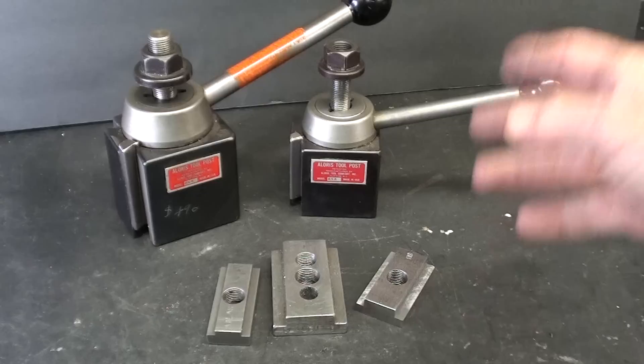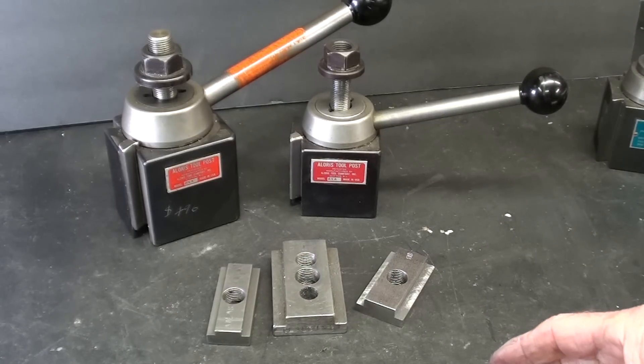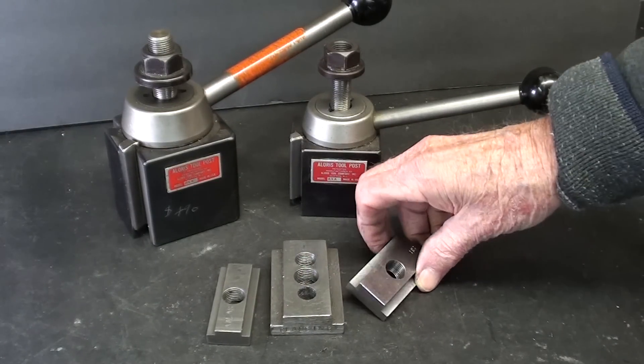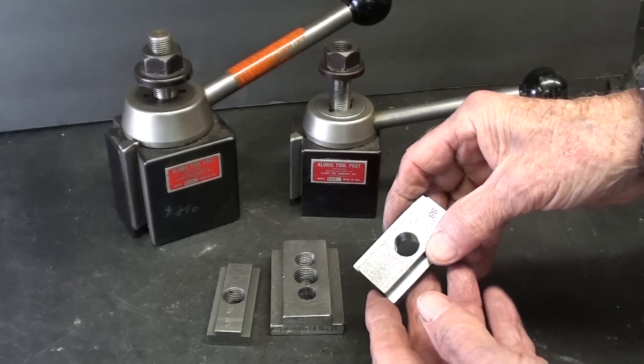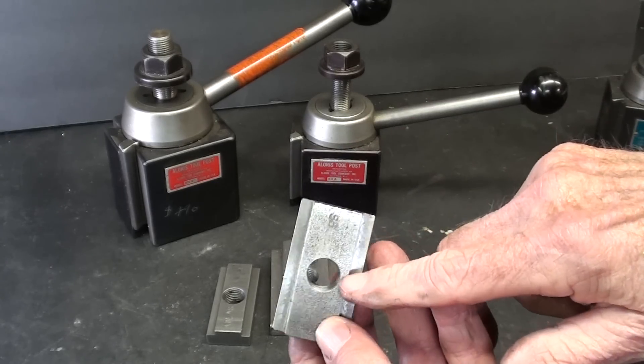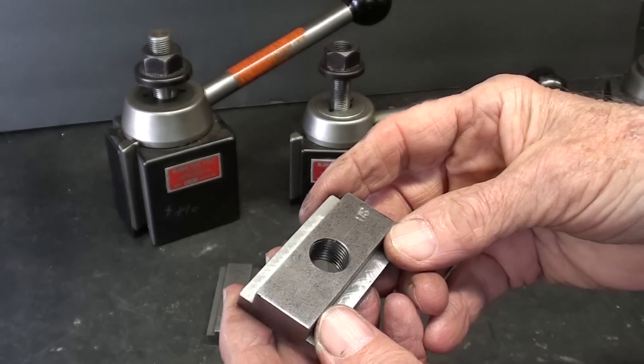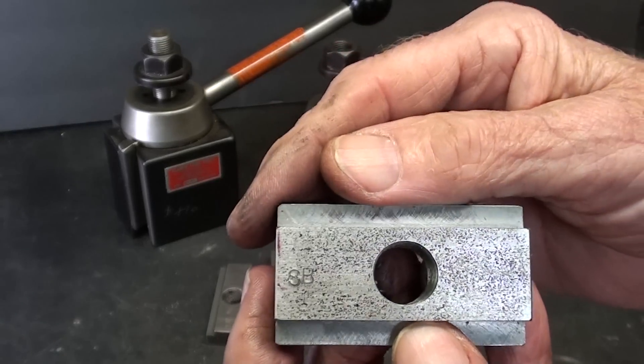When you purchase your Alorus tool post, you're going to get a blank T-nut, so you have to machine them to fit your compound. They will have the hole drilled and tapped. Some of these are homemade, and then I always mark them for the machine that they go in.